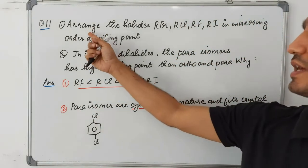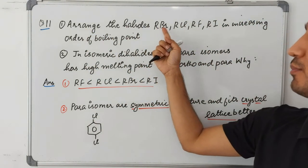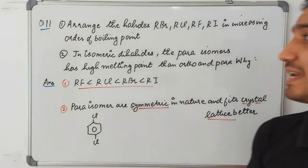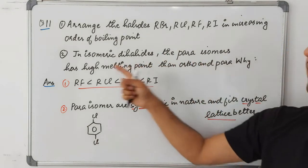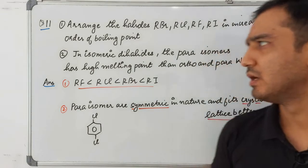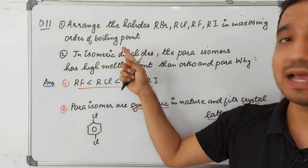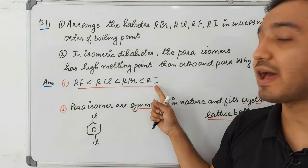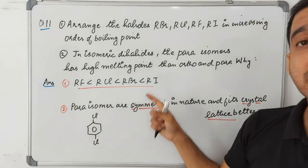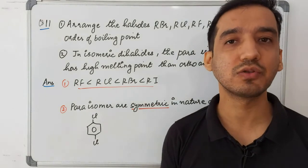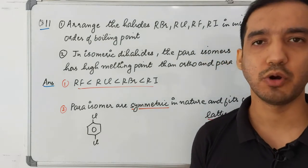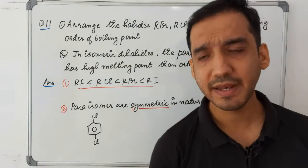Question eleven, part one: arrange RBr, RCl, RF, and RI in increasing order of boiling point. RI has the highest boiling point. As you go down the group, atomic size increases, van der Waals forces of attraction increase, and boiling point increases. So the order is: RF < RCl < RBr < RI.